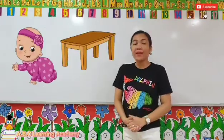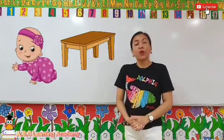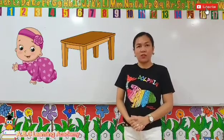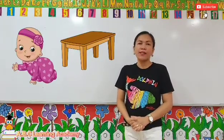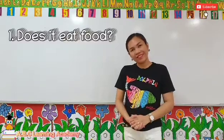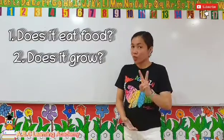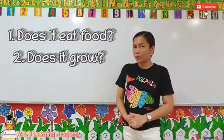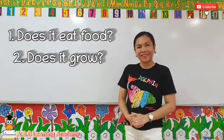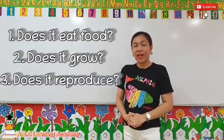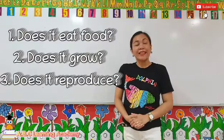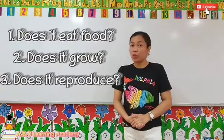Let us compare these two things. Here we have a baby and a table. In comparing these things, we should remember three questions: first, does it eat food? Second, does it grow? And third, does it reproduce?